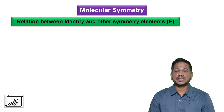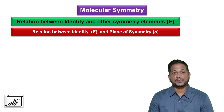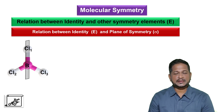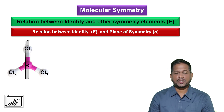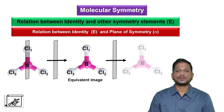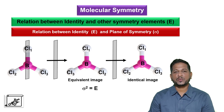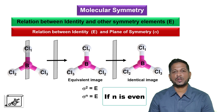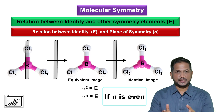Now let's look at the relation between the identity element and the plane of symmetry. Consider the BCl3 molecule — at the center there is a plane which bisects the molecule into two halves that are mirror images of each other. If we carry out this operation we get an equivalent image, and after the second operation we get an identical image. So we can write sigma squared is equal to E, and in general sigma raised to N is equal to the identity element.